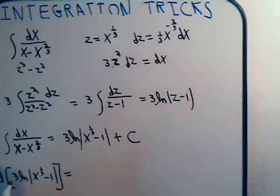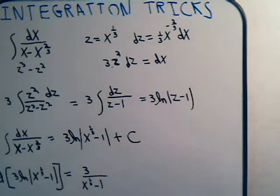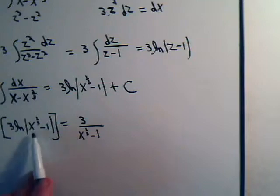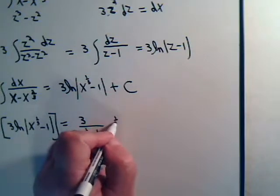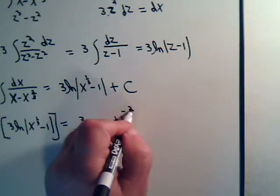So this will equal 3 divided by x to the one-third power minus 1 times the derivative of this. And that's going to be one-third x to the minus two-thirds dx.